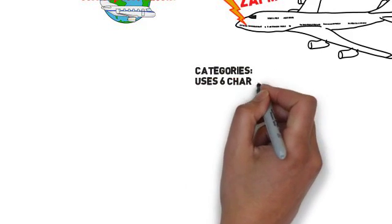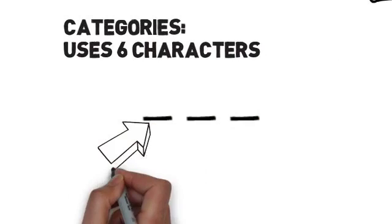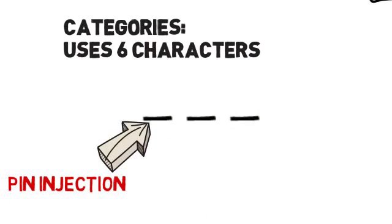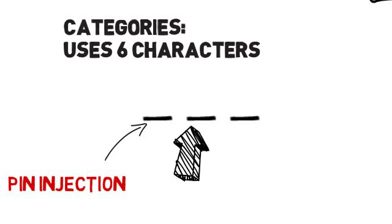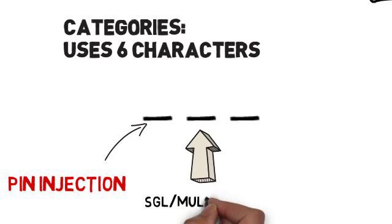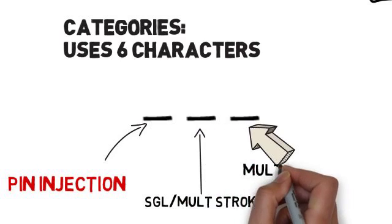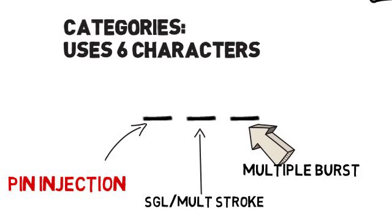Now the categories for section 22 consist of six characters. The first two call out the pin injection waveform set and test levels. The second set, or the third and fourth characters, refer to the single and multiple stroke waveform set and level. And finally, the last two characters determine the multiple burst waveform set and multiple burst level.